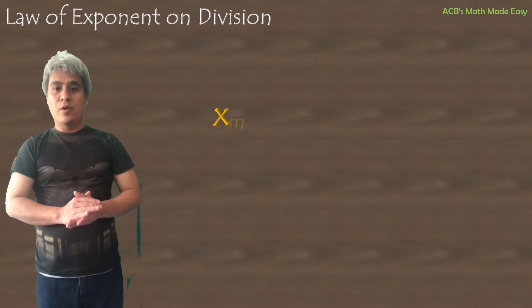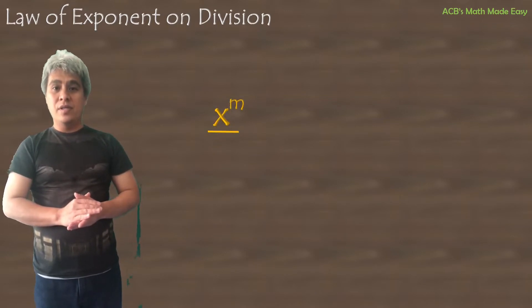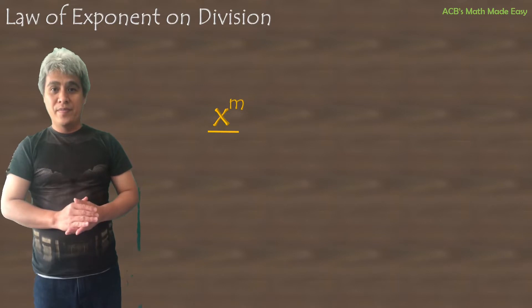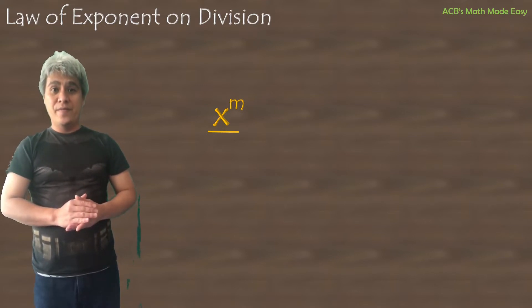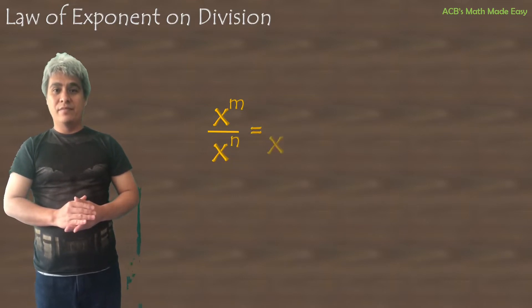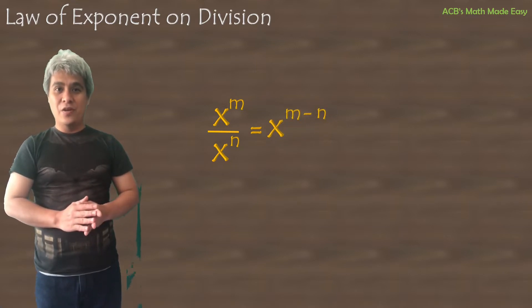Our formula on law of exponent on division is x raised to m over x raised to n equals x raised to m minus n, provided that the value of x is not 0.